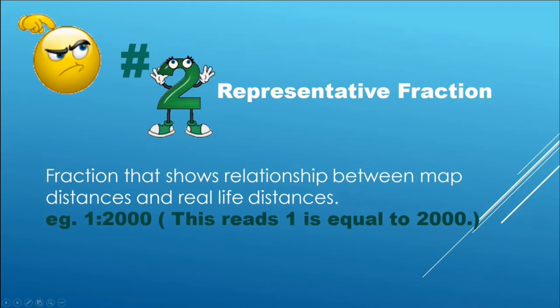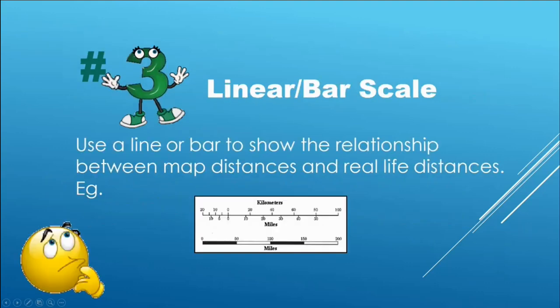Number two, representative fraction — these are fractions that show the relationship between map distances and real-life distances. Number three, linear or bar scale — these may use a line or bar to show the relationship between map distances and real-life distances, as shown in the example.